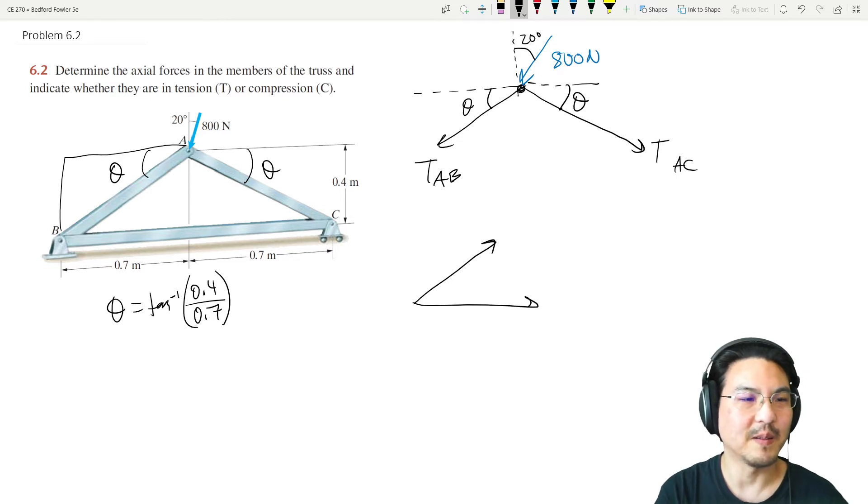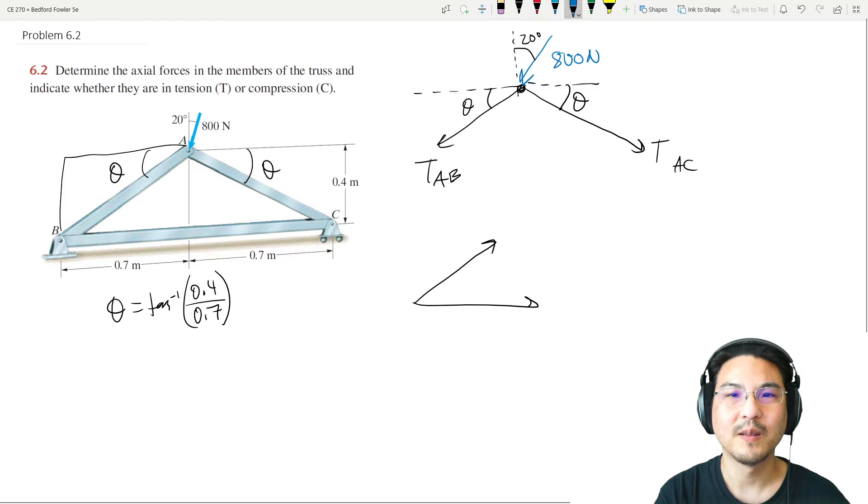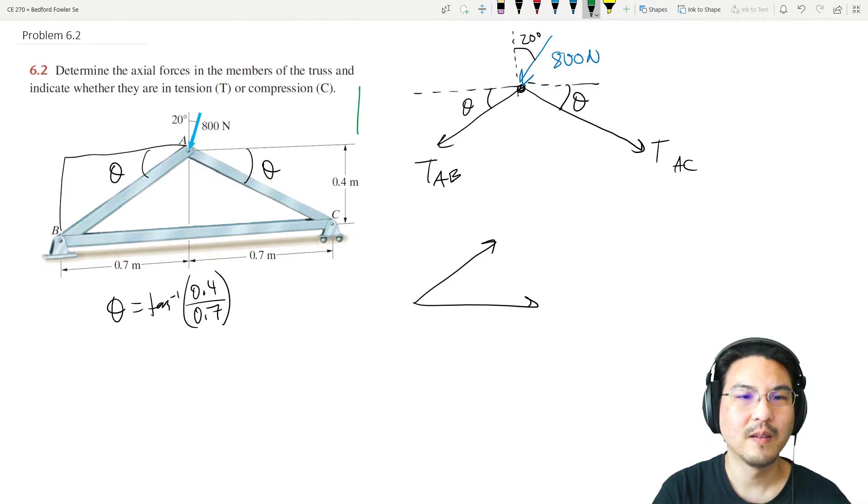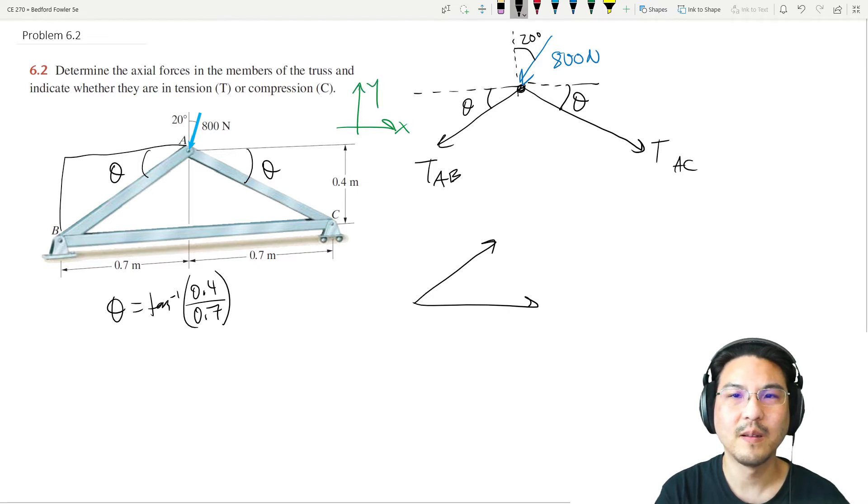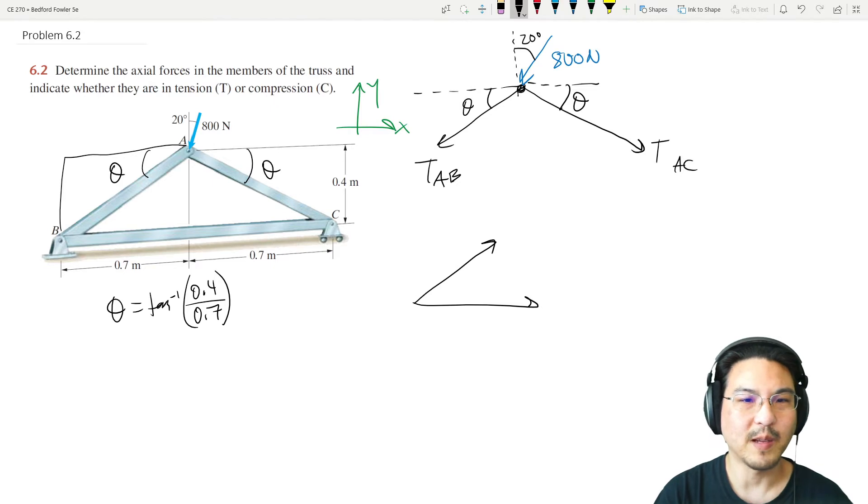Joint B looks like that, and then there's a pin. Let me pick a coordinate system. At the pin B, I will decompose the reaction FB into x and y components. This is BA and B, this one here is B and C.